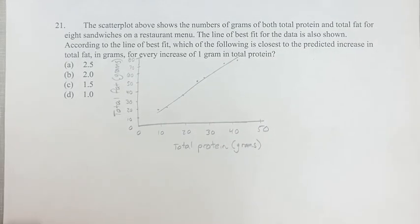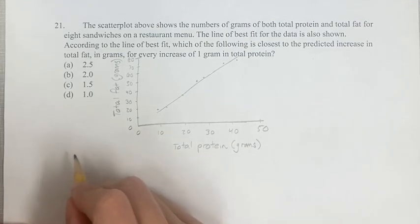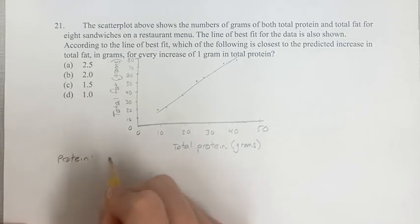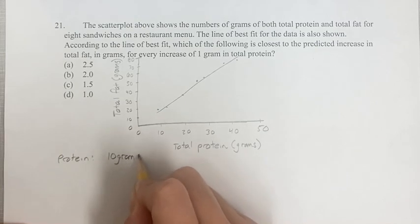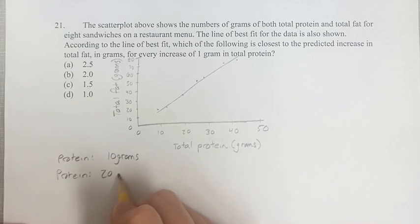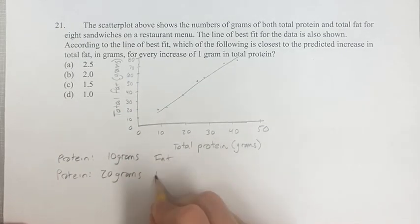So let's just take two points on the line. Let's say we take the total protein is 10 grams and the protein is 20 grams. Let's keep the numbers easy. What is the fat for these values as expected by the line of best fit?